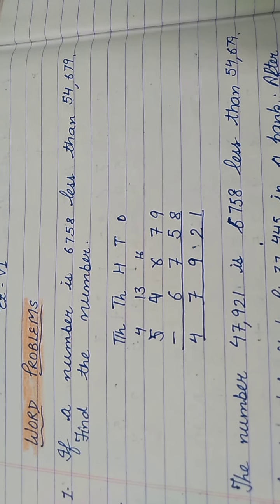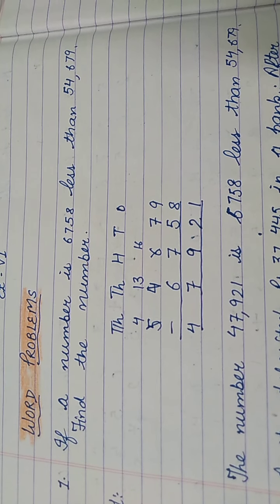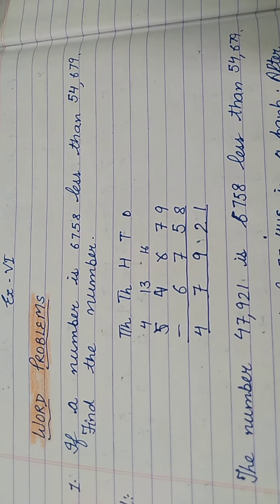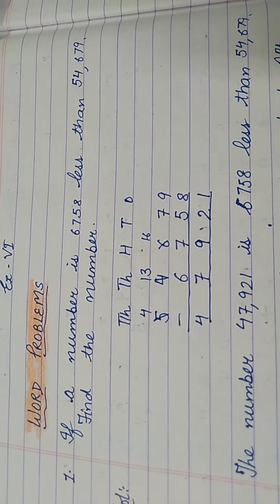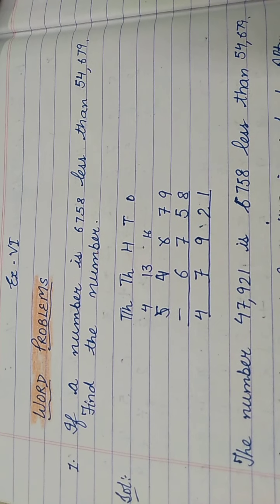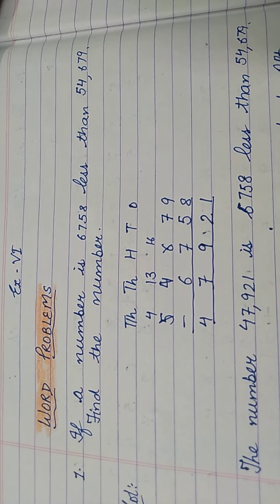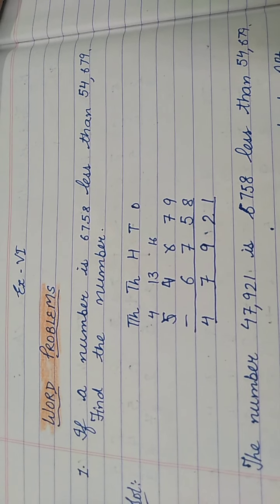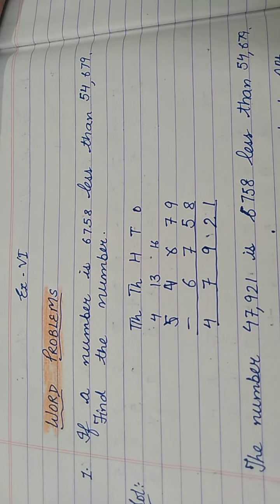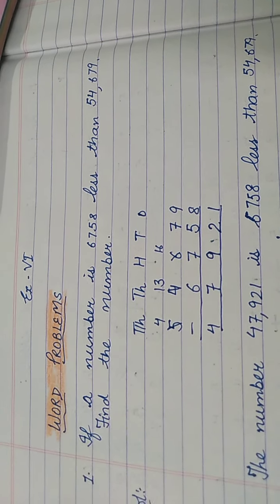9 minus 8 equals 1. 7 minus 5 equals 2. 6 minus 7 is not possible, so we borrow from 4. 4 becomes 3, and 6 becomes 16. So 16 minus 7 equals 9. Again, 3 minus 6 is not possible, so 3 becomes 13, and 5 becomes 4. So 13 minus 6 equals 7. And 4 minus 0 equals 4. So the number is 47,921, which is 6,758 less than 54,679.